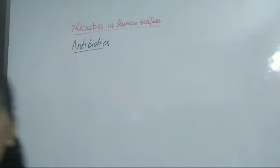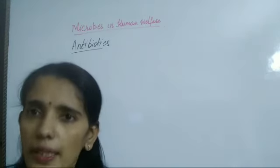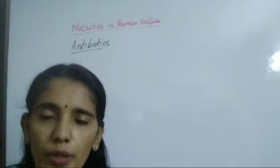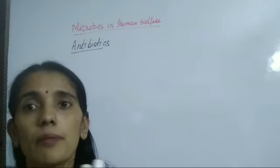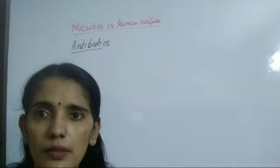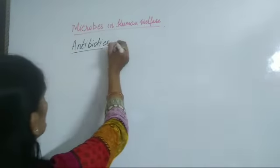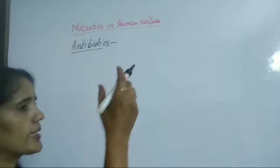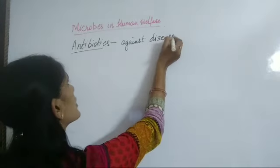What are antibiotics? We already know that for bacterial diseases, antibiotics are given which obstruct the pathway of bacteria and thus protect us from that particular disease. 'Anti' means against, and 'biotic' means life. So antibiotics are molecules that prevent the development or growth of microbes which cause diseases — they are against disease-causing microbes.